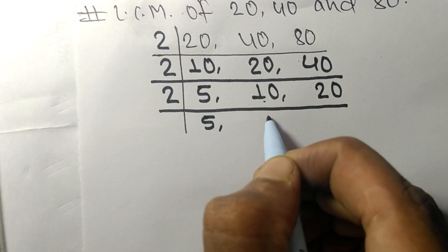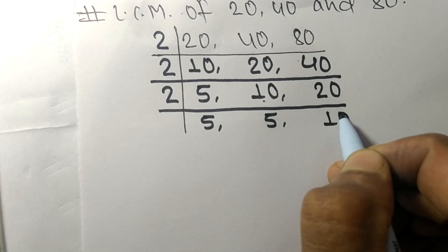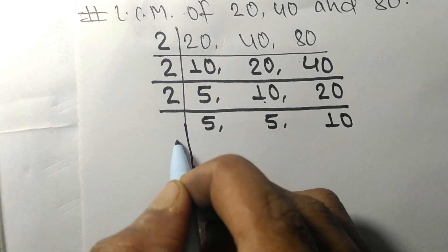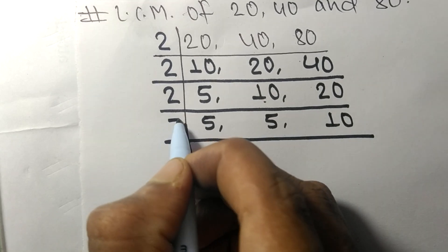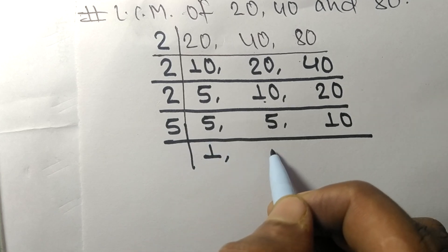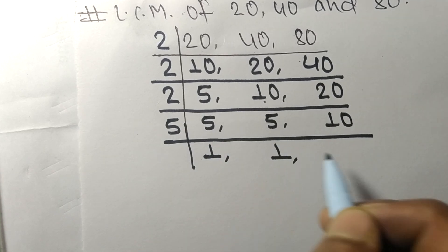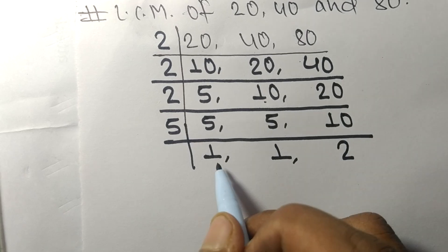2 times 5 means 10, 2 times 10 means 20. Now again these all numbers are divisible by 5. 5 times 1 means 5, 5 times 1 means 5, 5 times 2 means 10.